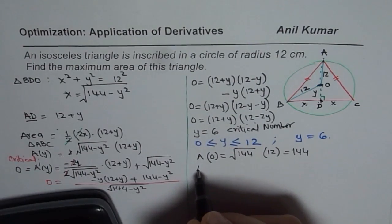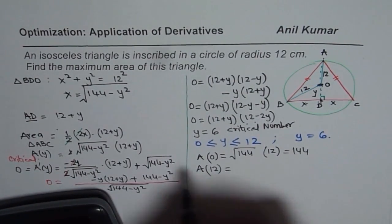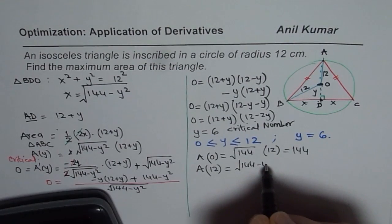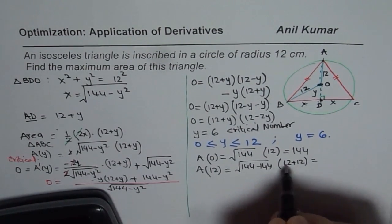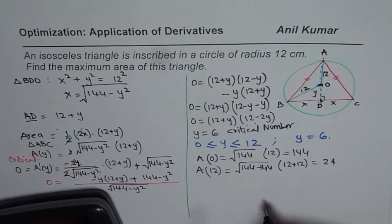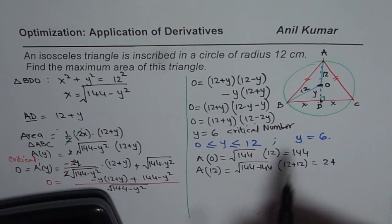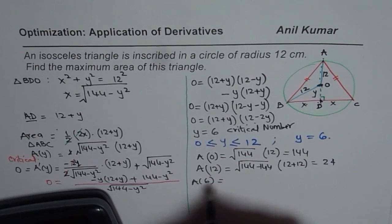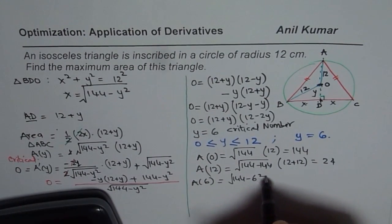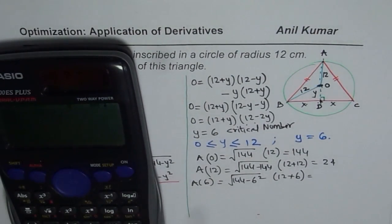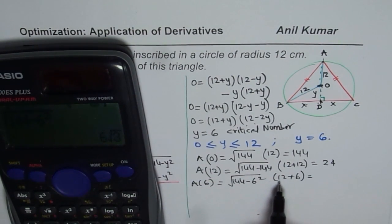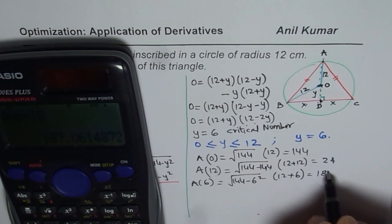For Y = 12: area equals square root of (144 minus 144) times (12 plus 12) = 0 times 24 = 0. For Y = 6: area equals square root of (144 minus 36) times (12 + 6). That is square root of 108 equals 6√3, multiplied by 18, which gives approximately 187.06.